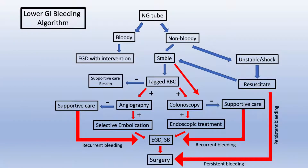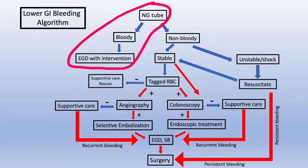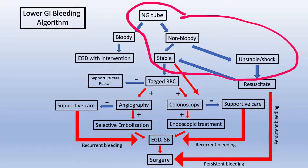Algorithms for management of massive lower GI bleeds have changed over the years. We can walk through this flowchart. As the patient is being assessed and the bleeding managed, an NG tube should be placed. If the aspirate is bloody, it suggests an upper source, and an EGD with intervention is recommended. If the aspirate is non-bloody, consider the stability of the patient. An unstable patient should be resuscitated as best as possible to enable imaging and intervention.